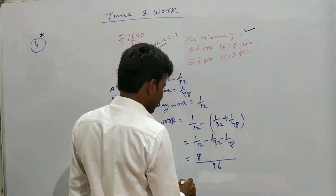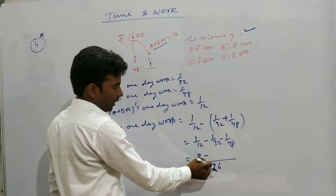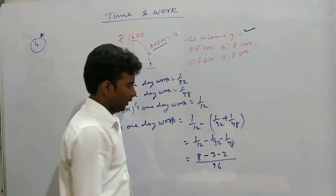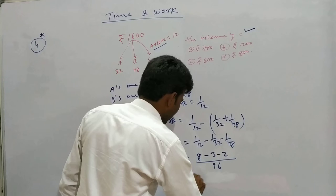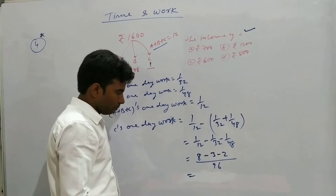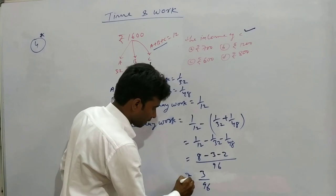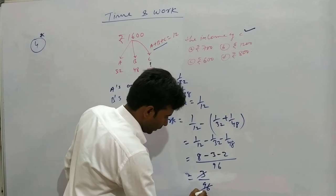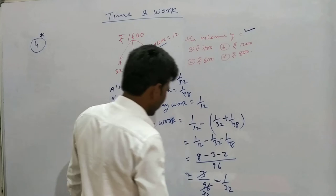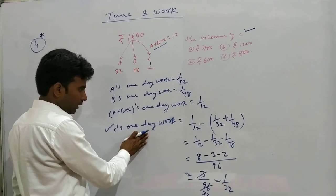12 goes into 96 eight times. Minus 32 goes into 96 three times. 48 goes into 96 two times. From here the value comes as 8 minus 3 minus 2 equals 3. So 3 divided by 96 equals 1 upon 32.